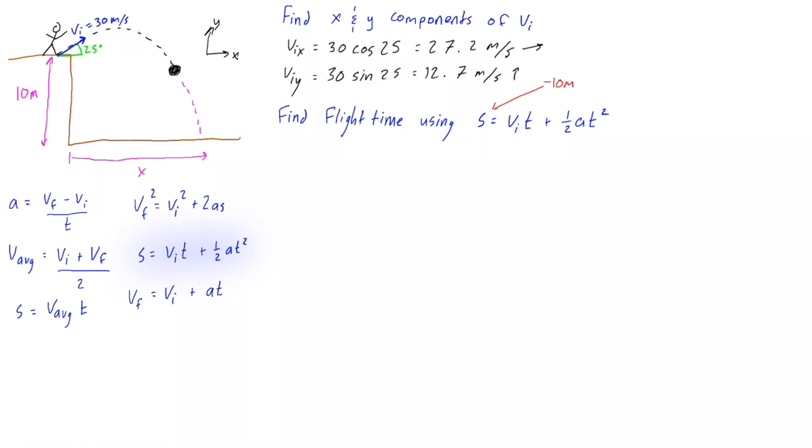V_i, this is going to be equal to v_iy, the initial y velocity, which is equal to positive 12.7 meters per second. Acceleration here, this is a, g, acceleration due to gravity, so this is negative 9.81 meters per second squared.